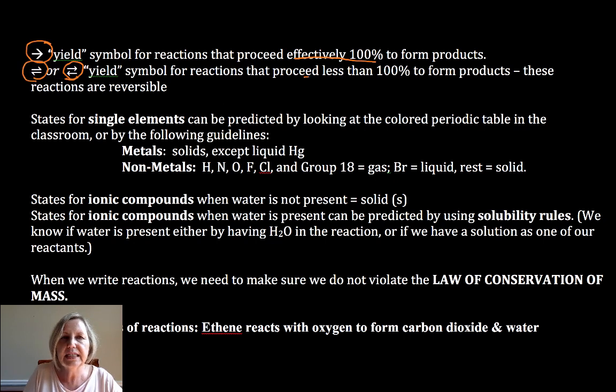You may see double arrows. And that means it proceeds less than 100% and that these reactions are reversible. That's why I don't like to use reversibility as a test for a chemical or physical change, because some physical changes aren't reversible, like ripping up paper. And some chemical changes are reversible. So we want to not use that as our test for chemical versus physical.